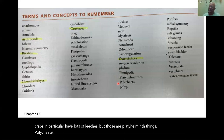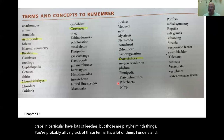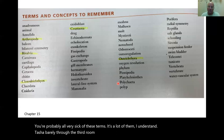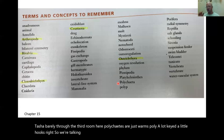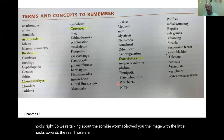Polychaetes are just worms. Poly means a lot, chaete means little hooks. When we talked about zombie worms, the image showed little hooks towards the rear — those are chaete. A polychaete worm.